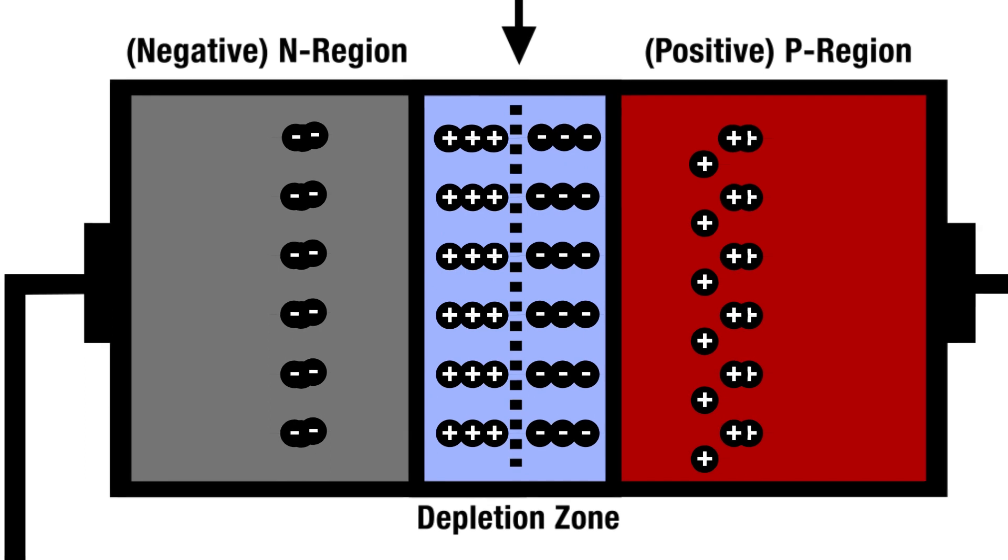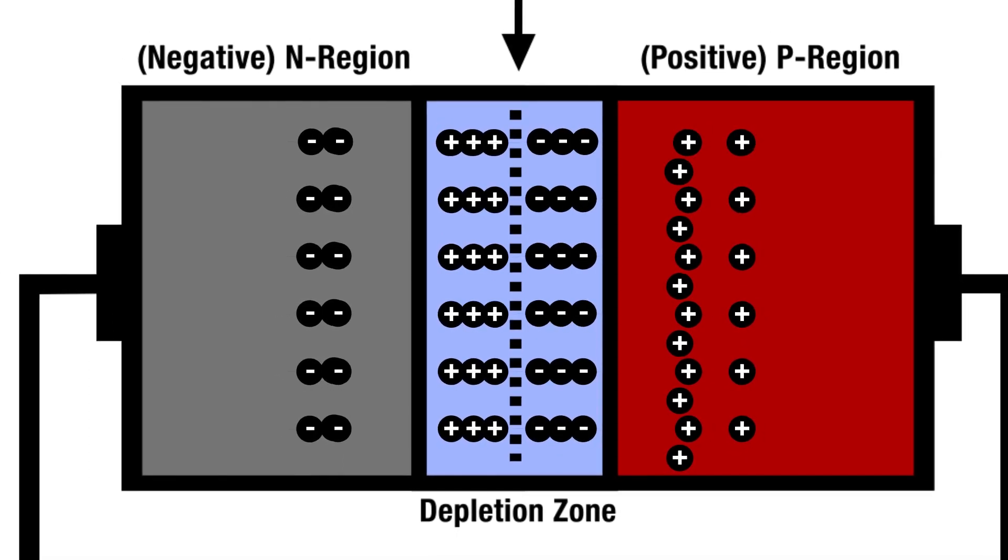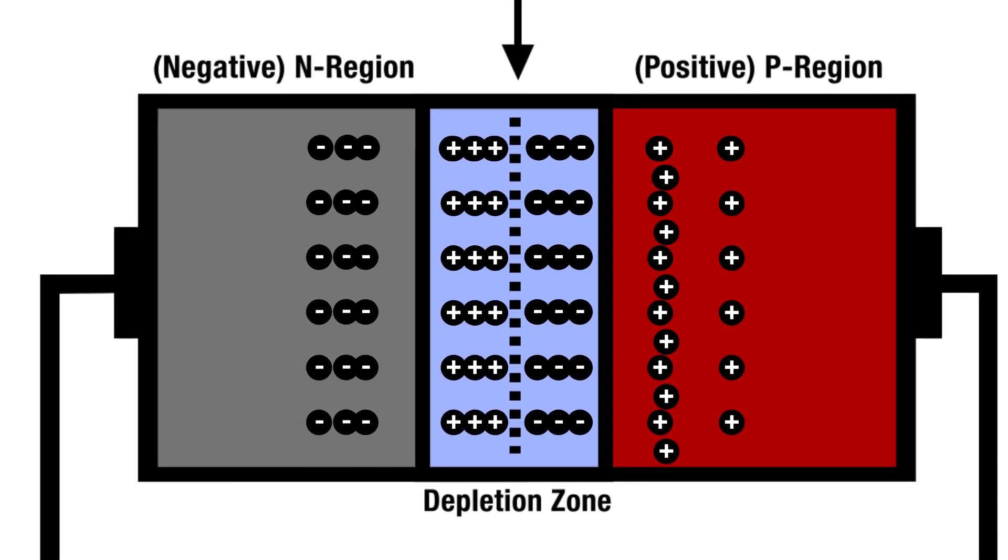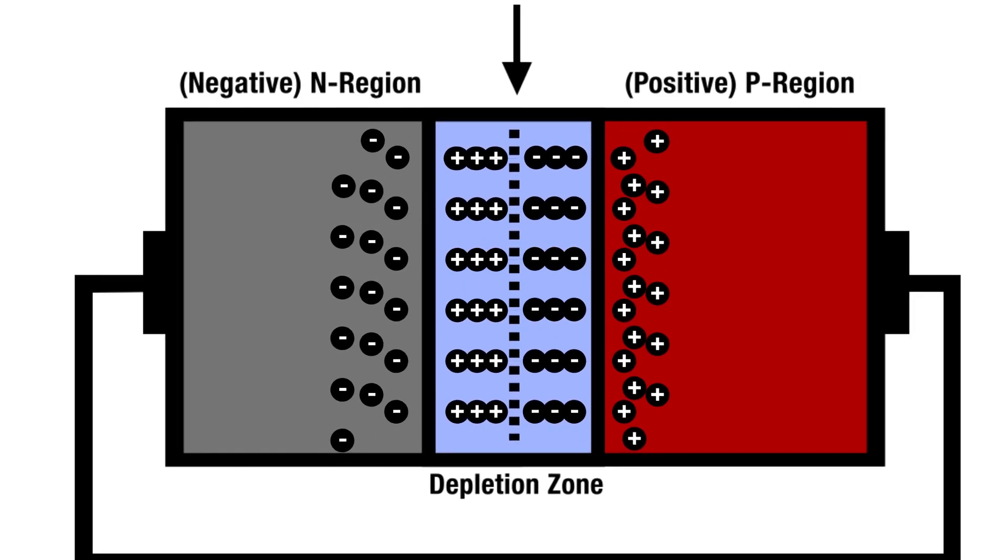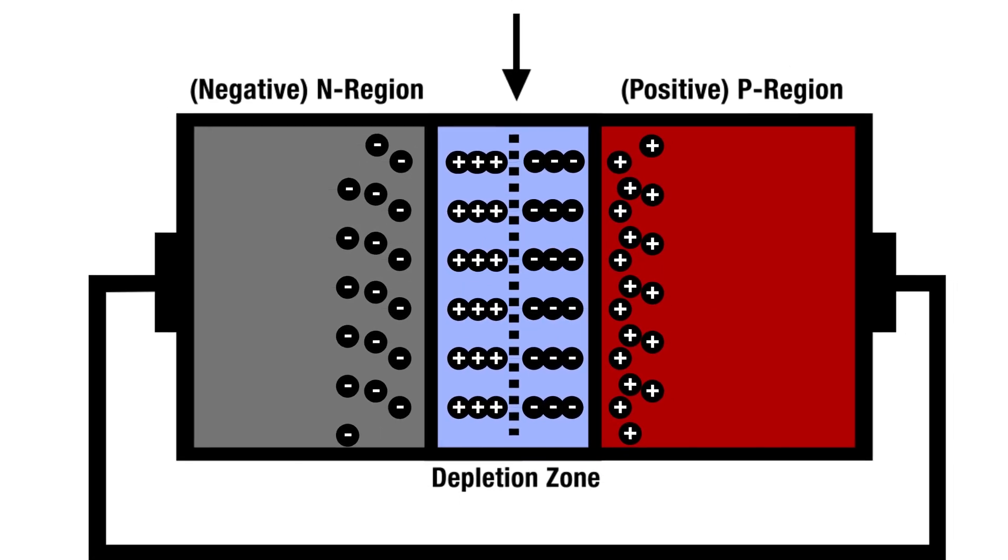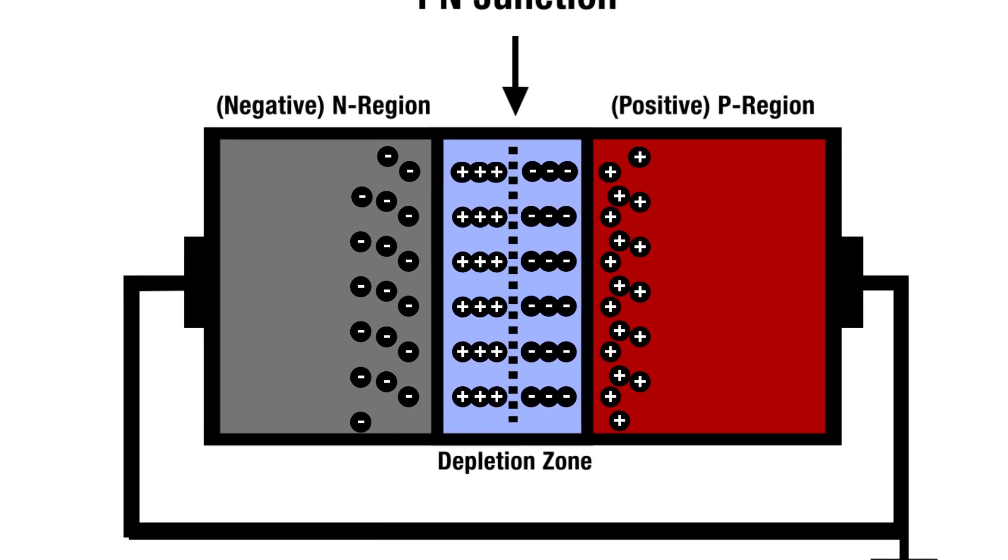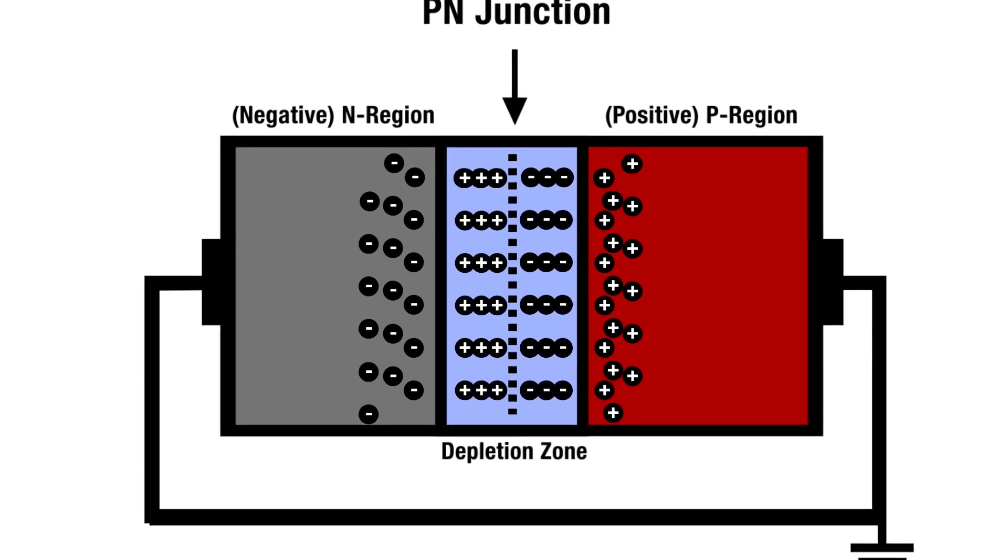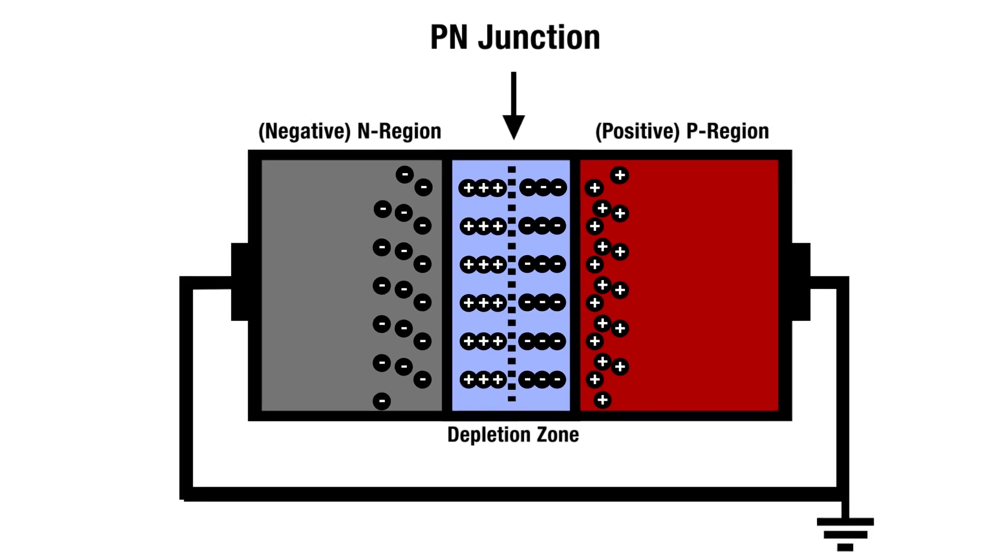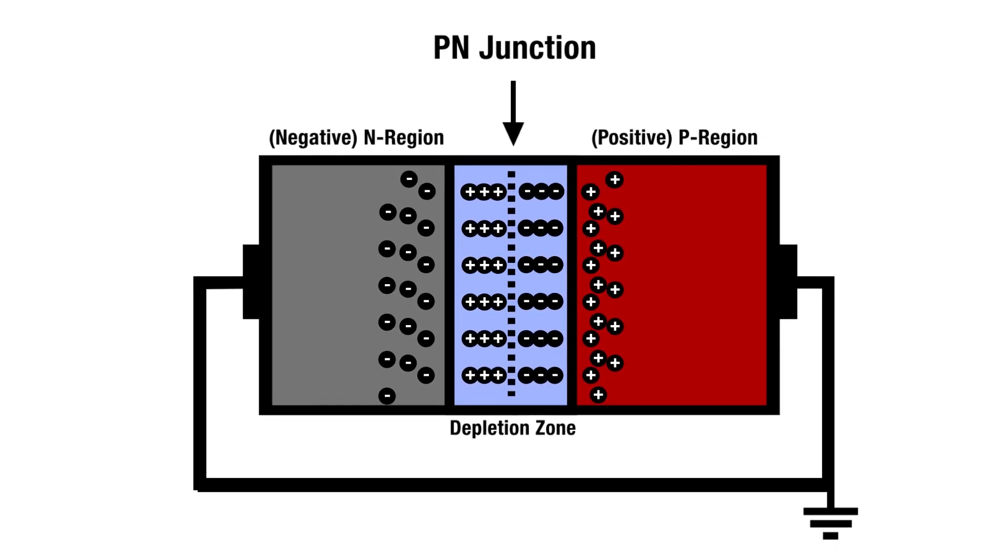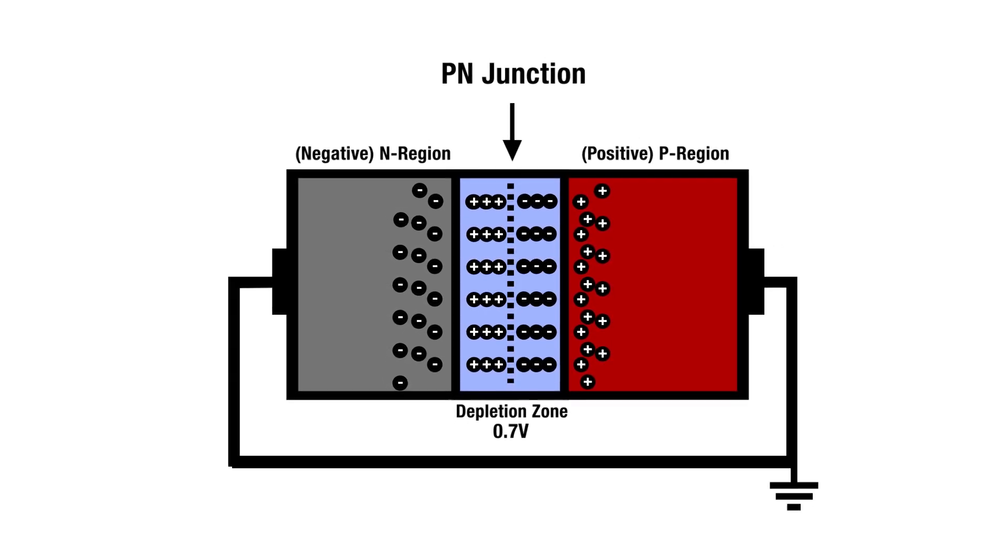Free electrons in the n-type region will continue migrating into the holes in the p-type region, causing the charges within the depletion zone to increase. These charges will eventually grow strong enough to begin repelling the charges in their region. The n-type side gains enough positive charge in its depletion zone to repel the negative charges in the region. And the same in the p-type side, where the depletion zone gets enough of a negative charge to repel the positive charge in the region. Eventually, the depletion zone becomes charged enough to stop electron migration. In a silicon diode, this happens at around 0.7 volts.